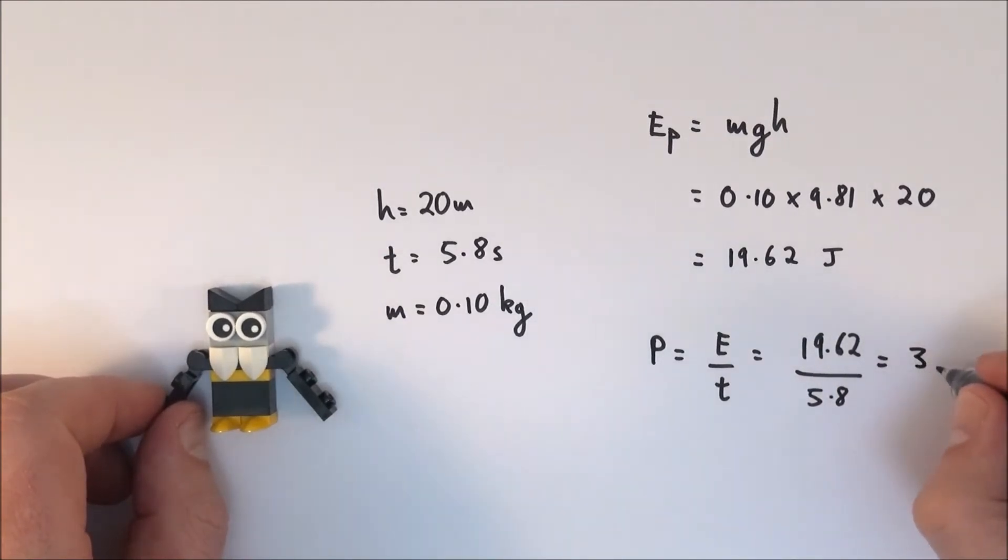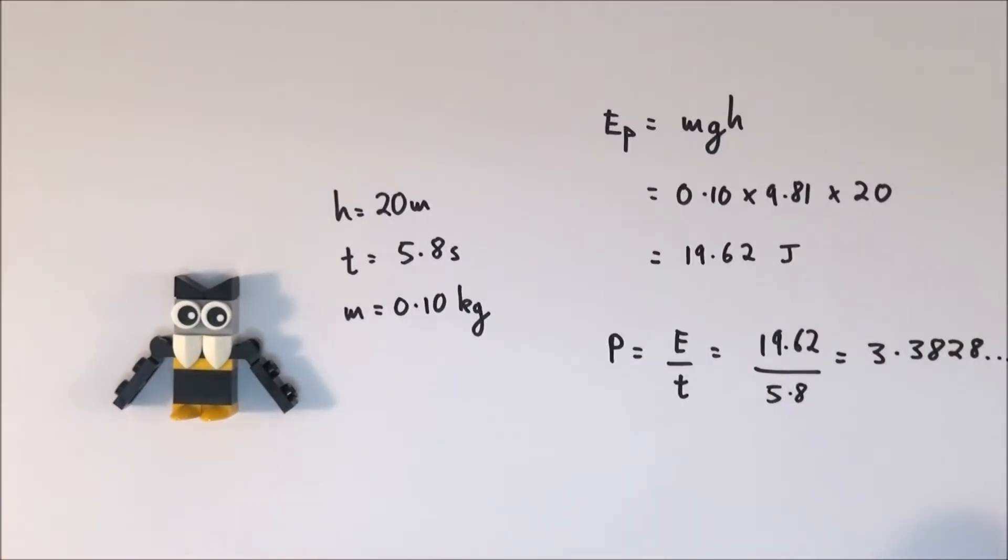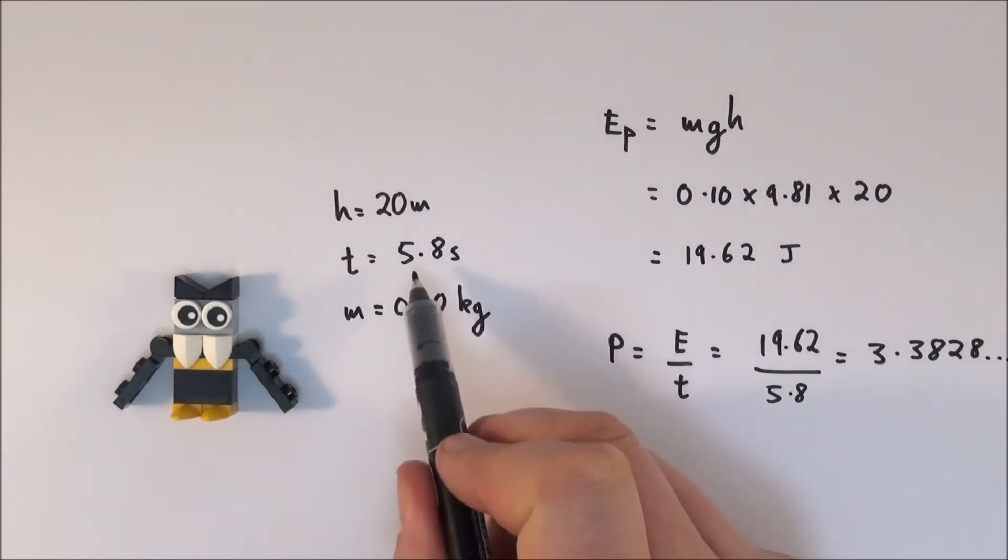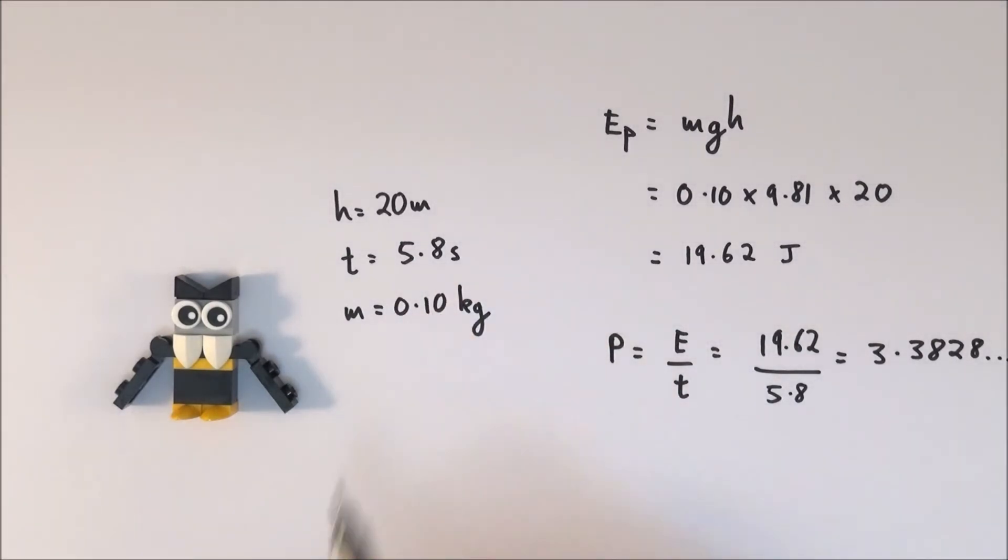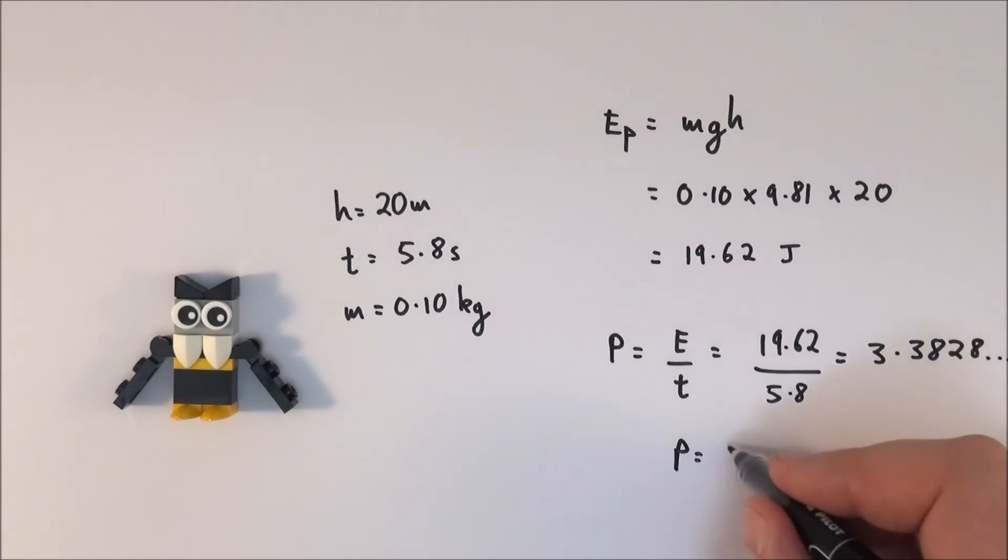This gives us a value of 3.3828 and it kind of keeps going on, so that would be the power in watts. Finally, just to finish off this question, I'm going to give it to an appropriate number of significant figures. I've got two significant figures here, two significant figures there, and therefore the power is going to be equal to 3.4 watts.